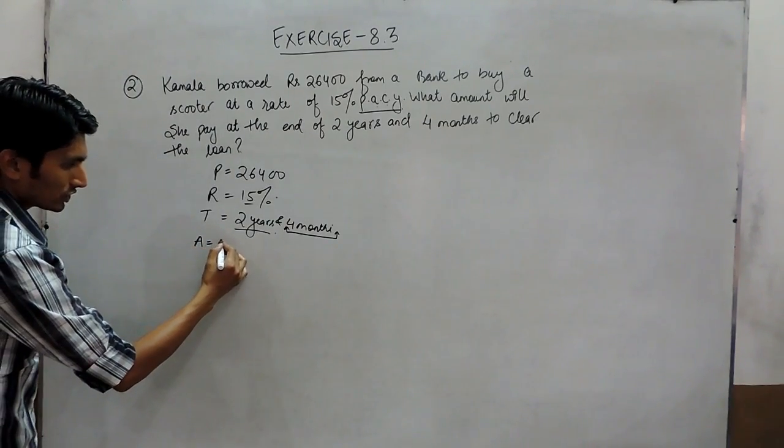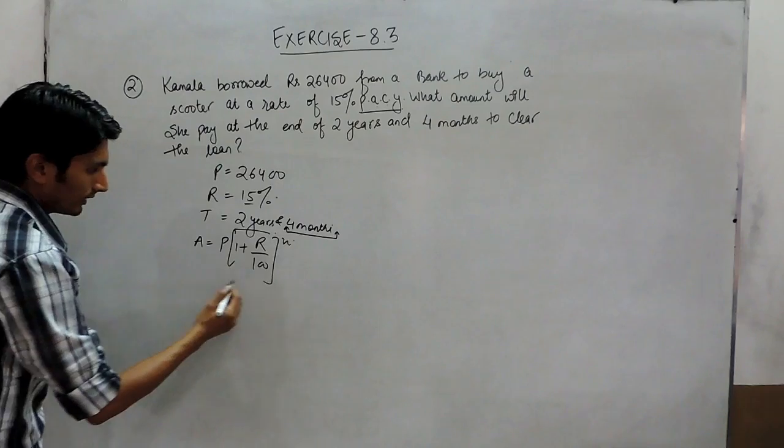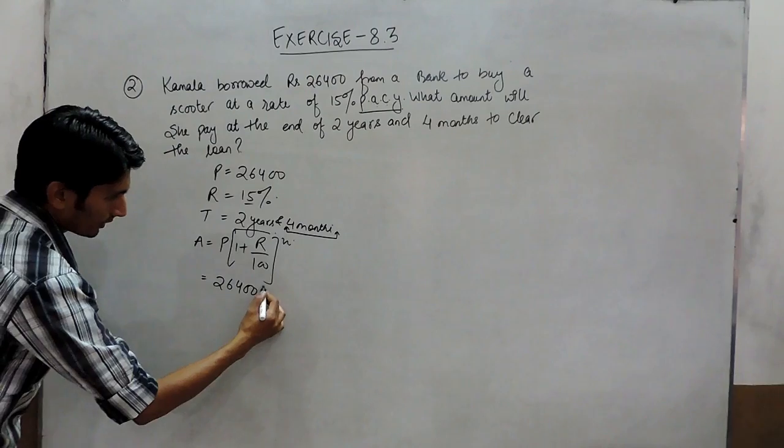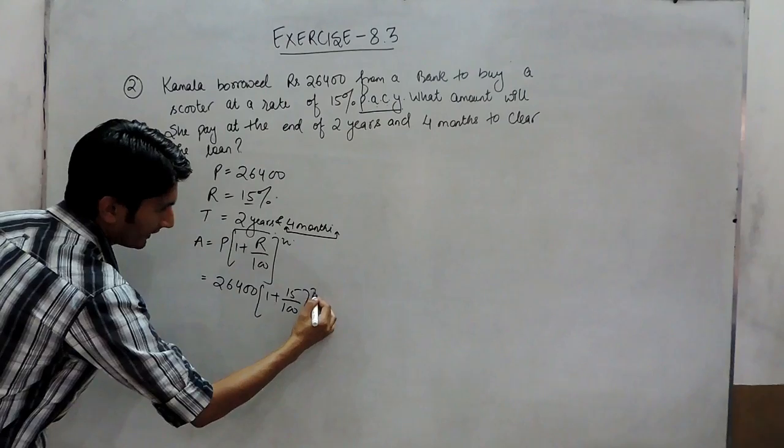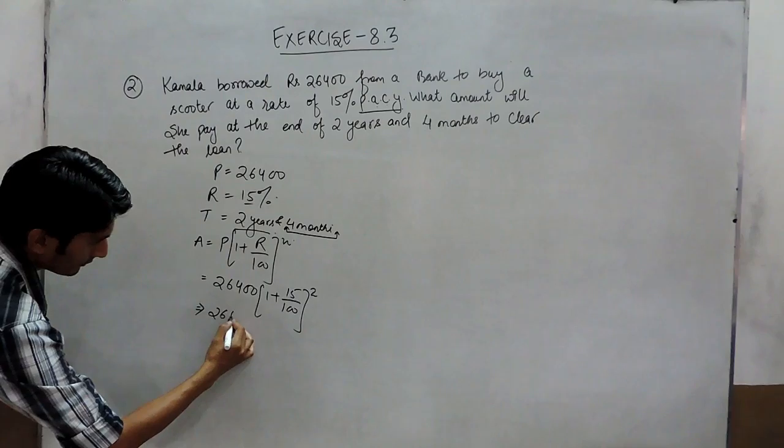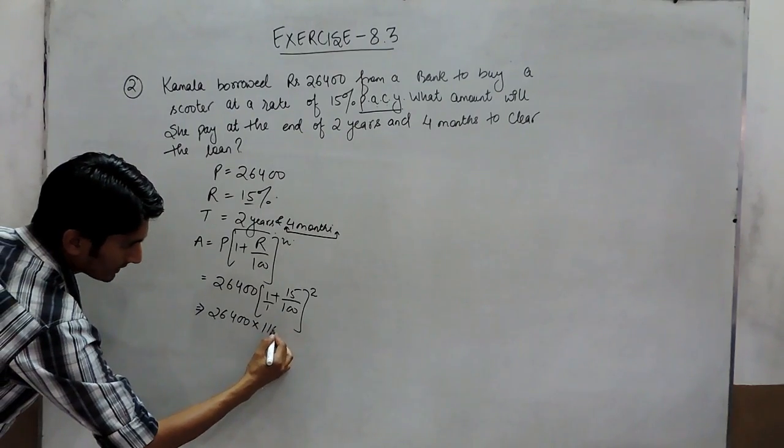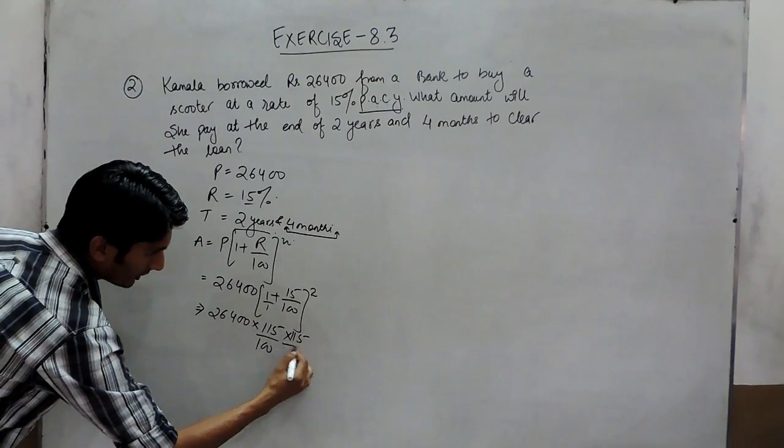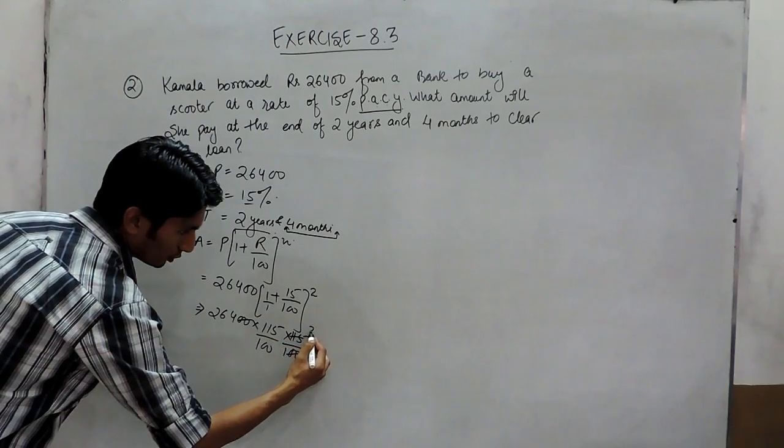We find the amount using the formula A = P(1 + R/100)^n. Here, the principal is 26,400, rate is 15%, and we're finding it for the first 2 years. Solving this: 26,400 × (115/100)^2. Taking the LCM and simplifying, this becomes 115/100 raised to power 2. Canceling: 5, 2, 10, 15.